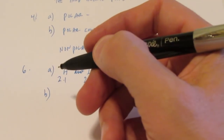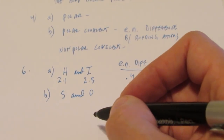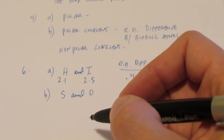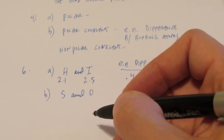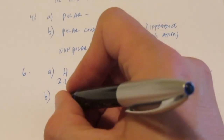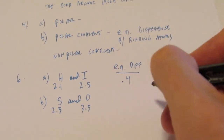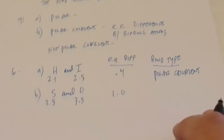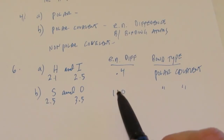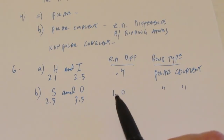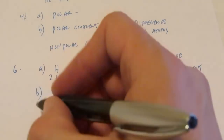We'll do letter B for you as well. That's S and O. The electronegativity of sulfur is 2.5, and the electronegativity of oxygen is 3.5. So the electronegativity difference is 1.0, and this one's also polar covalent. Remember from our notes, if that gets bigger than 1.7, then we're going to call it ionic. If there's a difference at all, we call it polar covalent. And if there's no difference, we call it nonpolar covalent.